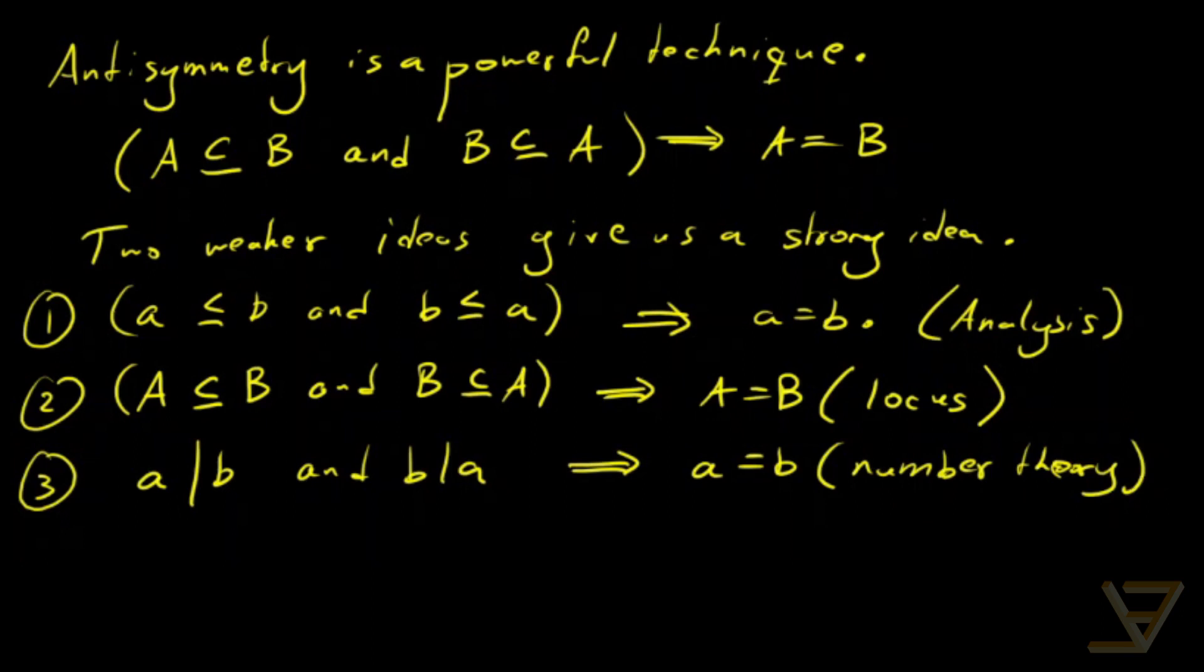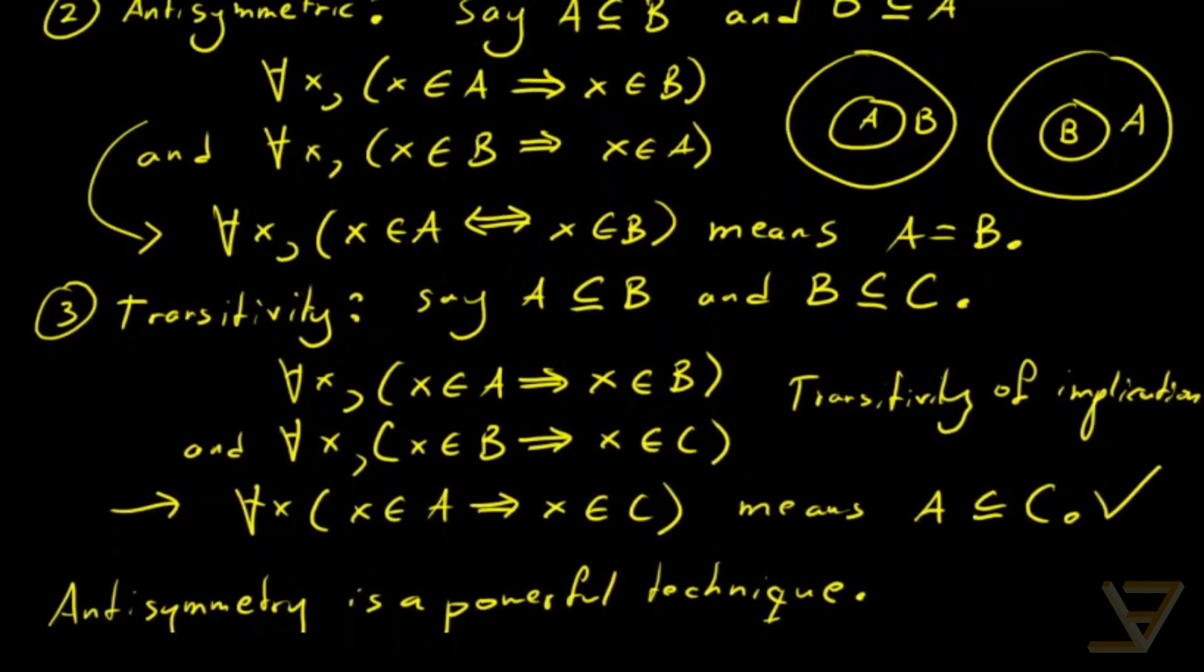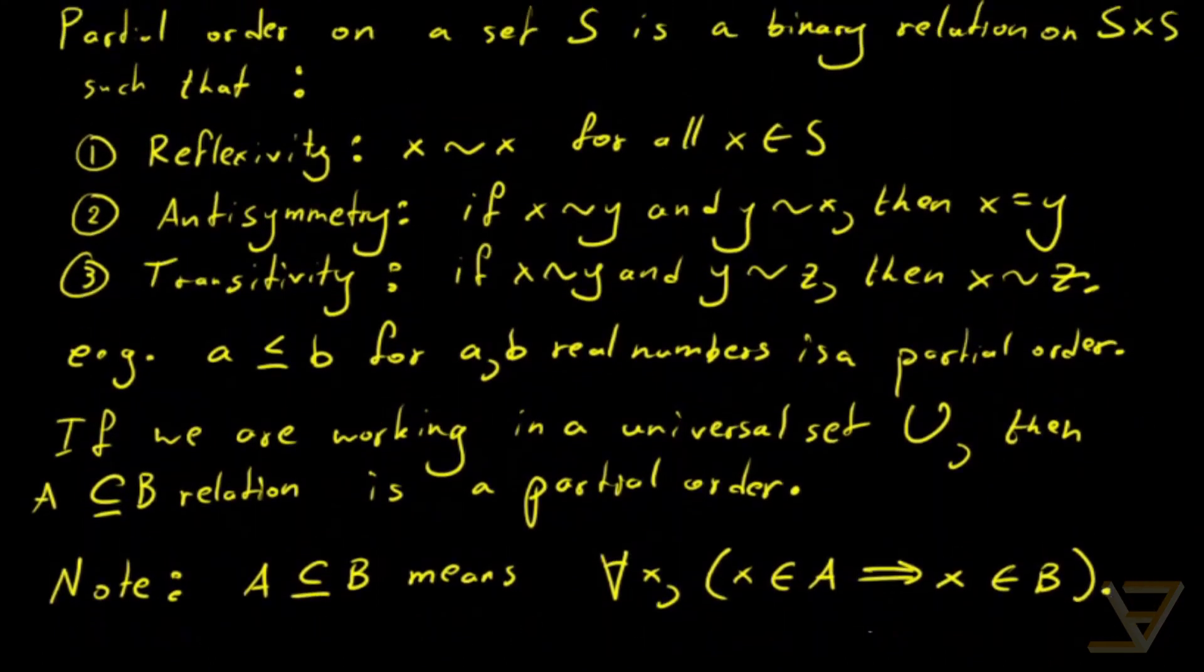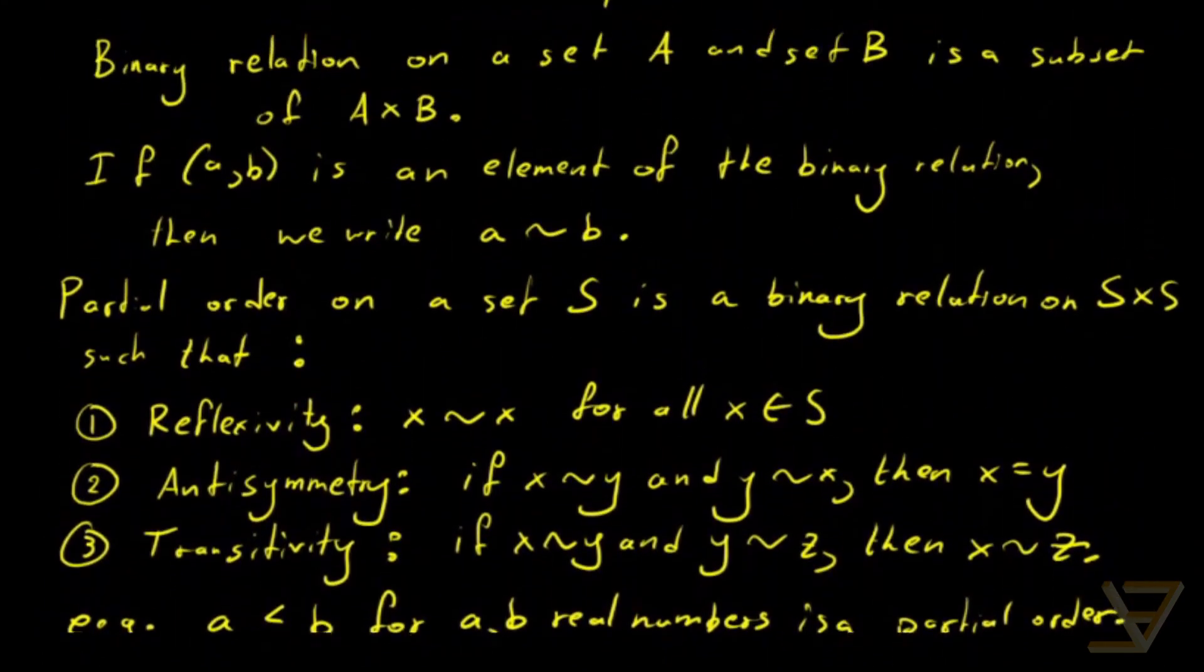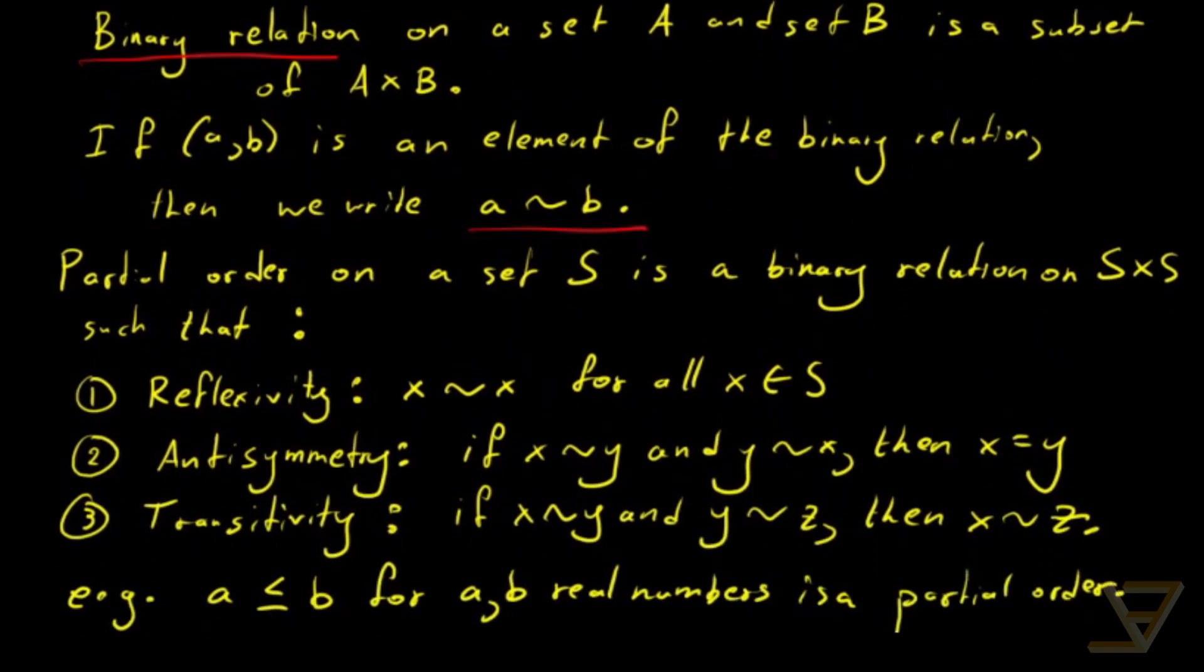Okay, so that brings us to the end of our talk. I'll give you a quick recap of what we proved. First, we discussed what a Cartesian product is. Then we defined a binary relation. We talked about tilde notation. Then we defined a partial order, which is a binary relation on S cross S that's reflexive, antisymmetric, and transitive.